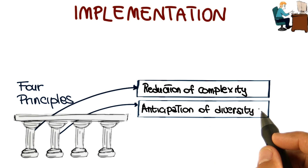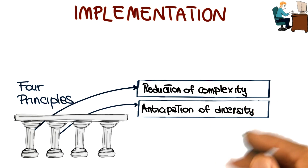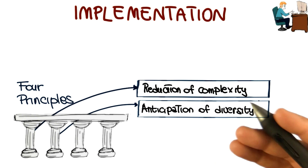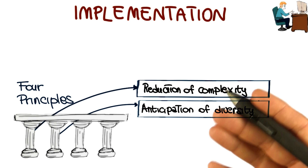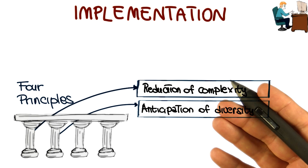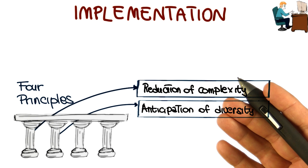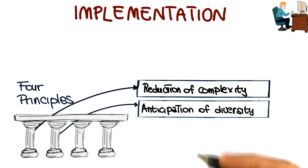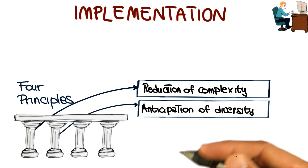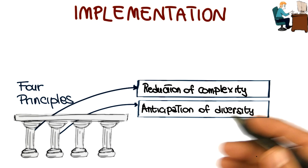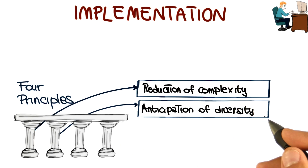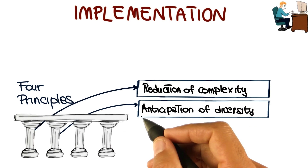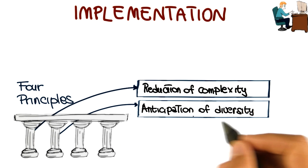The second pillar is the anticipation of diversity, which takes into account that software construction might change in various ways over time. That is, the software evolves, and in many cases it evolves in unexpected ways. And therefore, we have to be able to anticipate some of these changes.